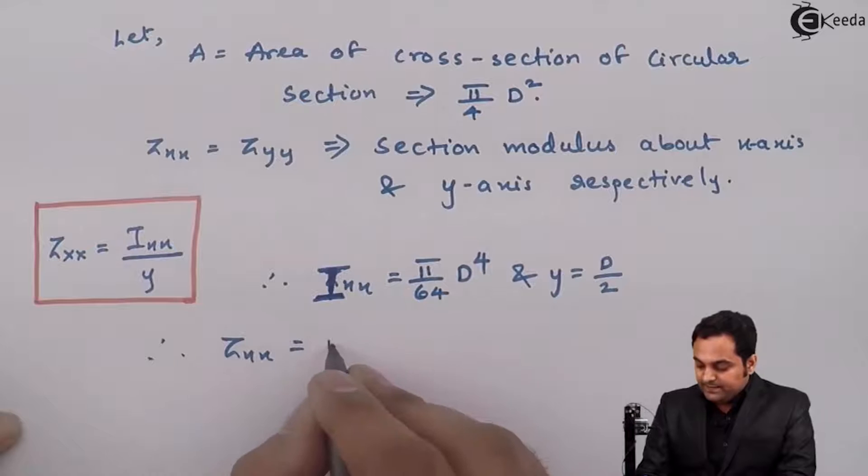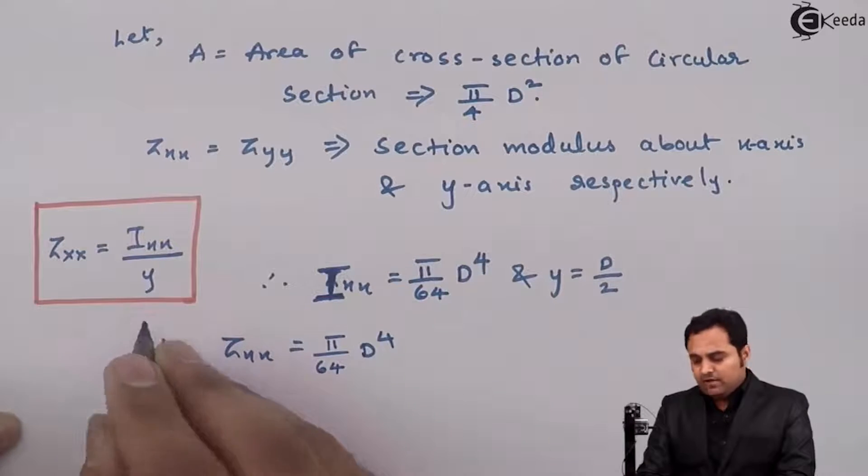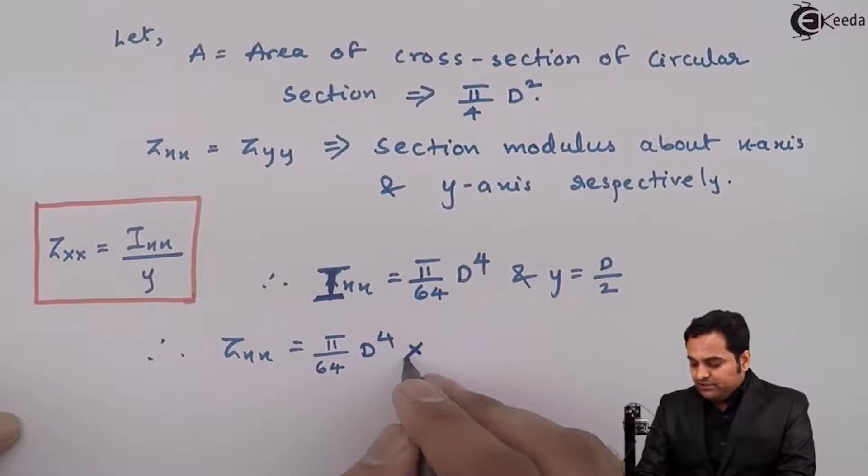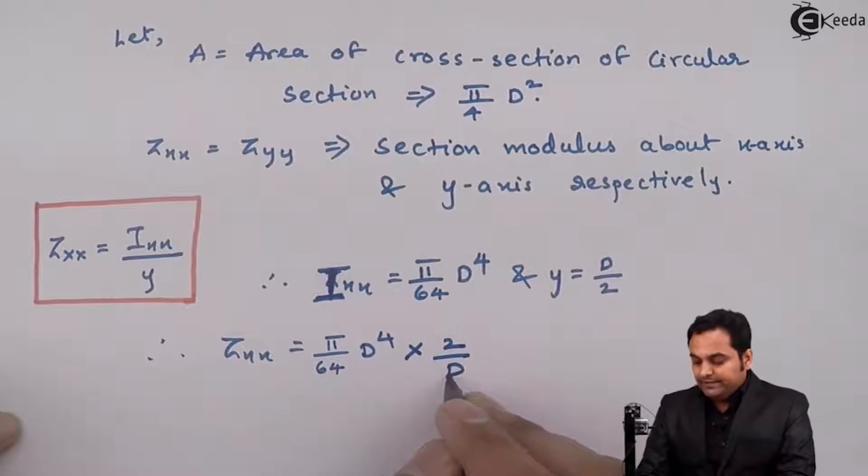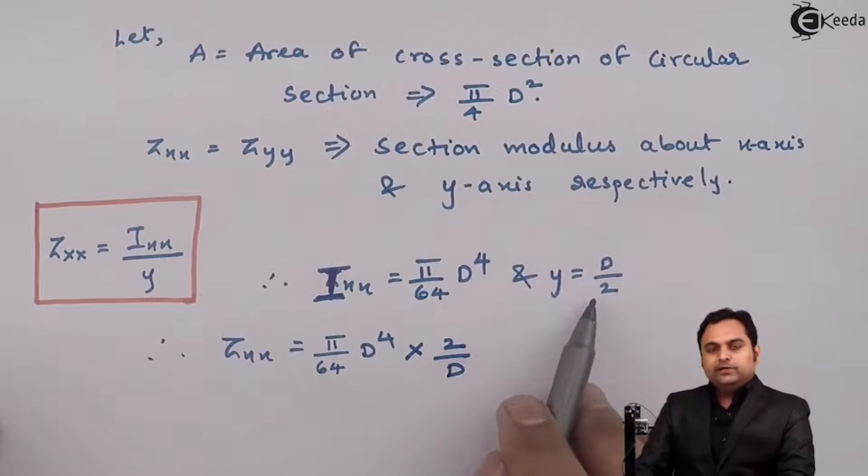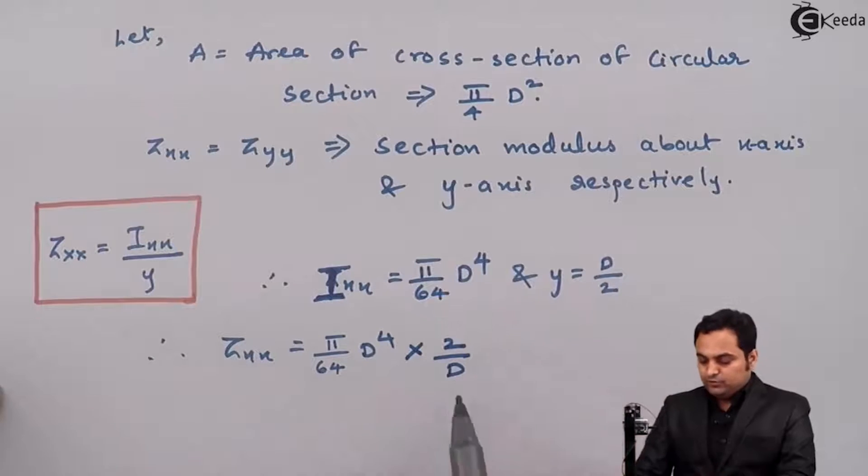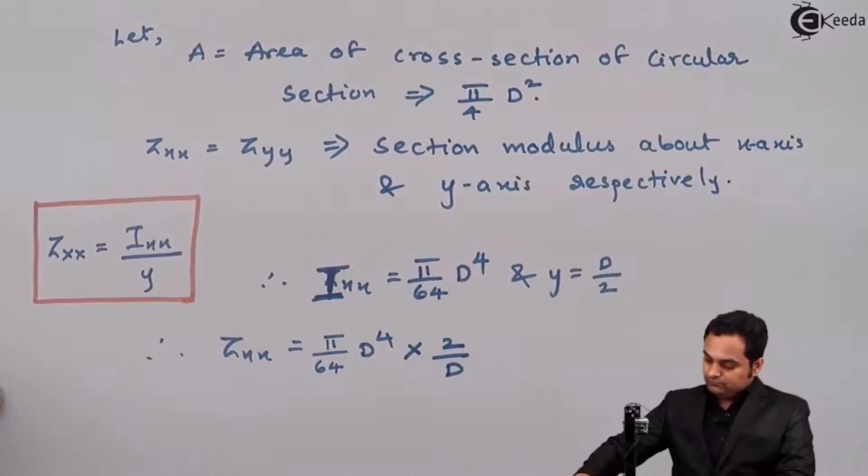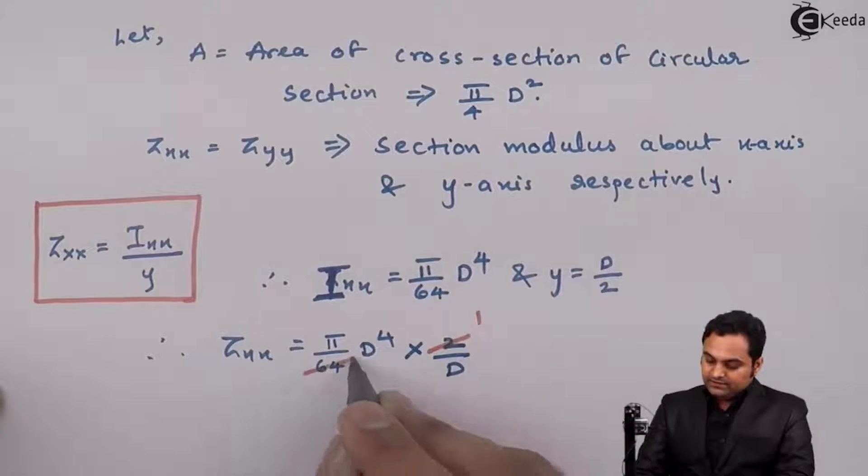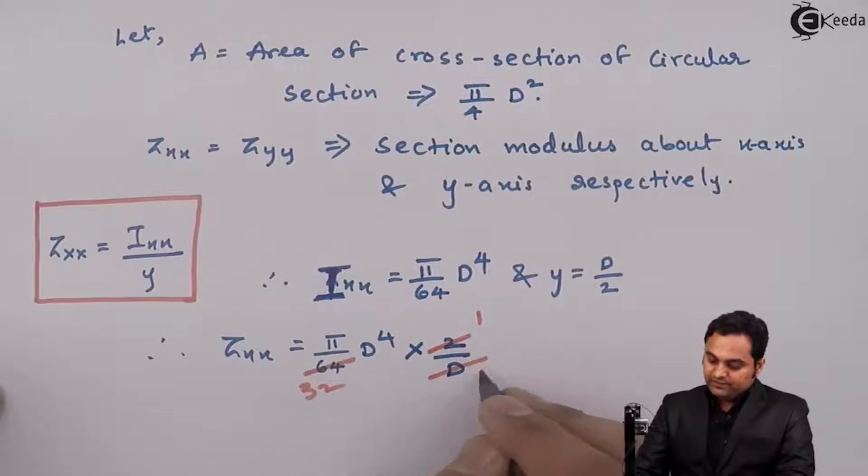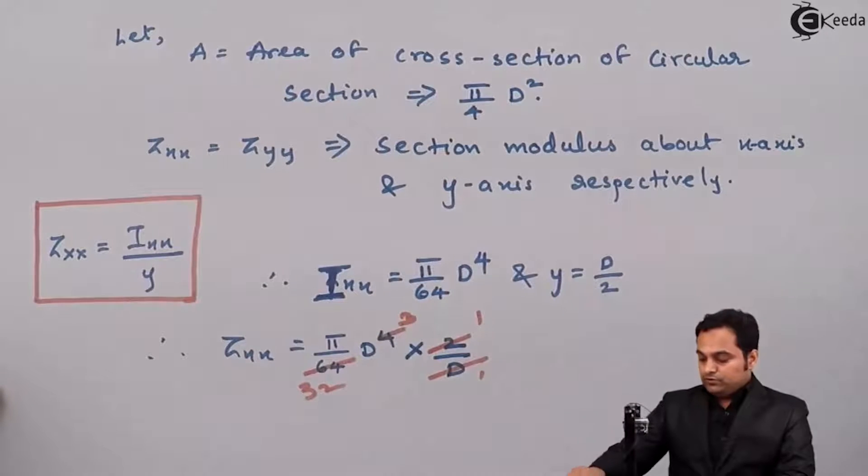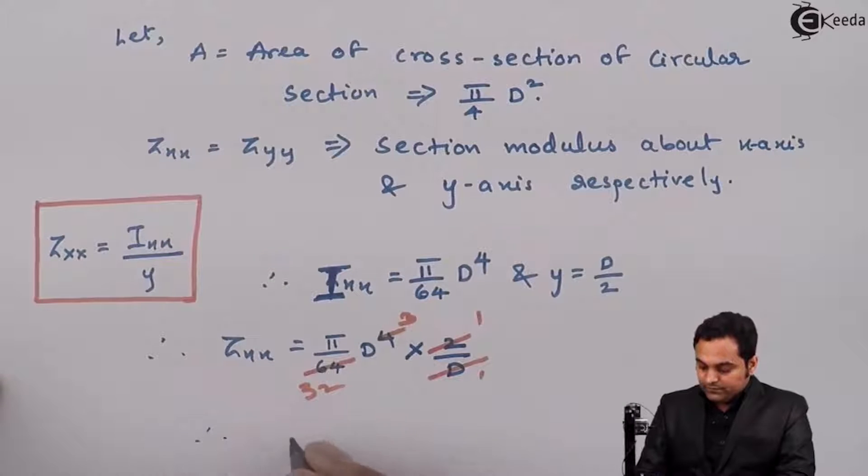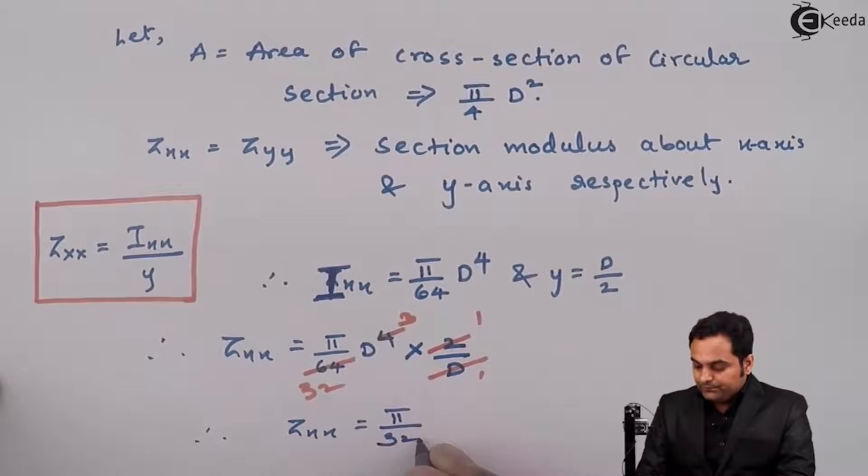We have IXX = π/64 D⁴ divided by y. If I write multiplication, this becomes reciprocal, so 2/D. After cancellation, 2 and 64 simplify, D cancels to D³. Therefore ZXX is π/32 D³.